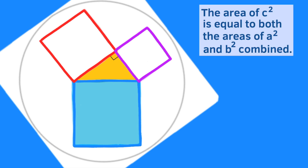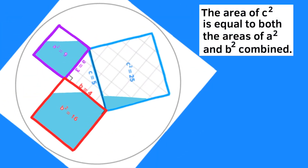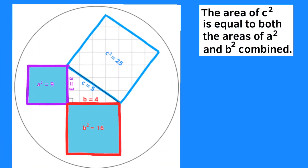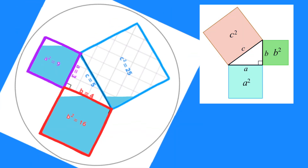The area of C squared is equal to both the areas of A squared and B squared combined.